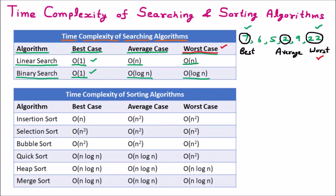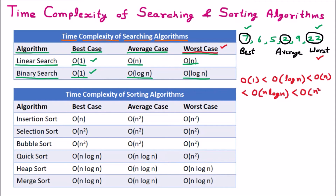If we check the order of complexity: O(1) is always the least, followed by O(log n), then O(n), then O(n log n), then O(n²), and it goes further to O(n³) and beyond — complexity always increases in this order. So if we compare linear search and binary search in the worst case, binary search has O(log n) which takes less time, so binary search is better than linear search.